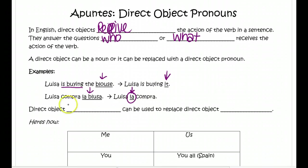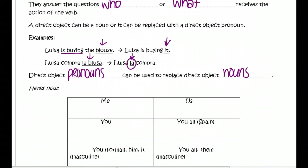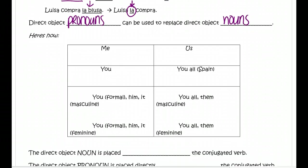Direct object pronouns can be used to replace direct object nouns in a sentence — it just makes it a little bit less specific. So instead of 'I'm buying the blouse' or 'the shirt,' you say 'I am buying it.' So here's how we do it in Spanish.